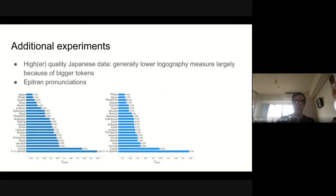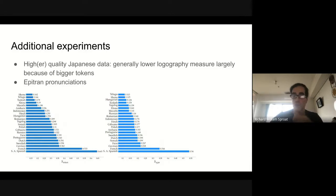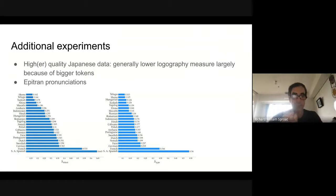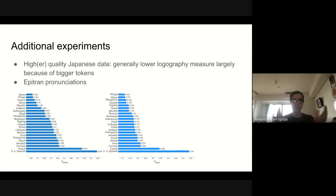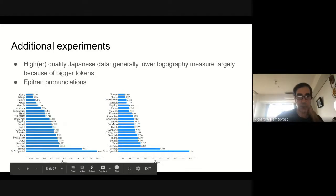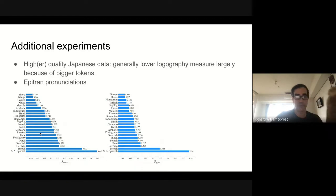We did some additional experiments. We looked at some higher-quality Japanese data generated from an internal text-to-speech normalization system, and generally got lower logography measures, largely because we predicted larger tokens. This also relates to the point about tokenized Chinese — I'll return to that shortly. We also ran a bunch of languages through Epitran, an open-source, mixed-quality pronunciation system, including languages not previously treated such as Swedish and Russian.